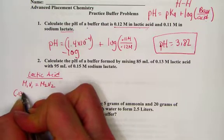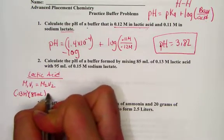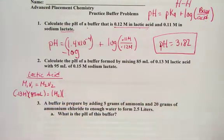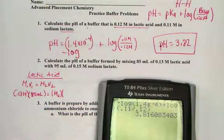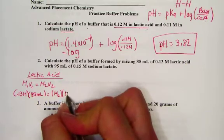So, if we started with 0.13 molar and 85 mL of the acid, what would the new concentration be once we've added the volumes together? So, 85 plus the 95 give us a new total volume of 180 mL.